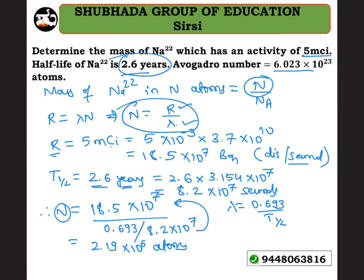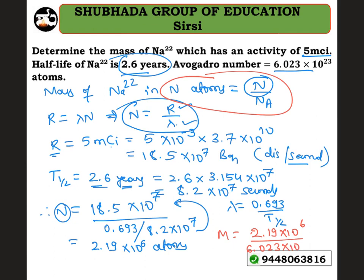Now substitute to find the mass. Mass equals the number of atoms N divided by Avogadro's number. Mass equals 2.19×10⁶ divided by 6.023×10²³. You will get mass equals 8×10⁻⁷ grams. That is the answer for this problem.